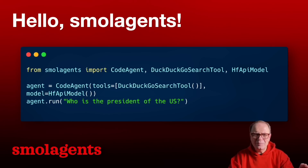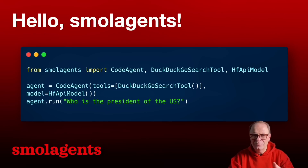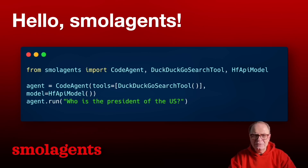Let's take a look at the code real quick. The first line is from SmolAgents — we import CodeAgent, DuckDuckGoSearchTool, and the HfApiModel, which is the HuggingFace API model. These three classes are enough to construct our first agent, with CodeAgent by passing the tools in an array. In this case we're passing the DuckDuckGo search tool, and we're defining the model as the HuggingFace API model, and then calling agent.run.